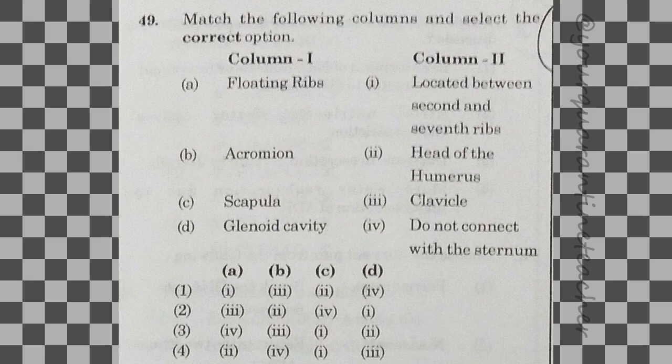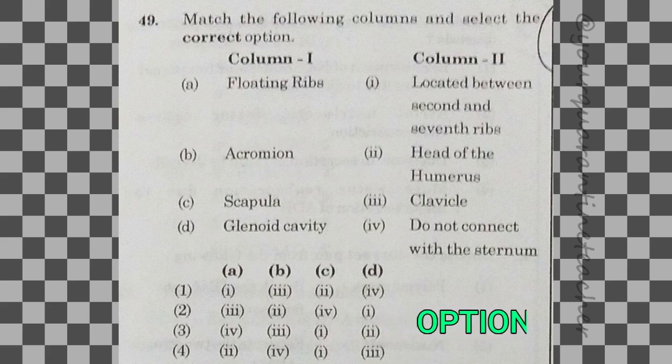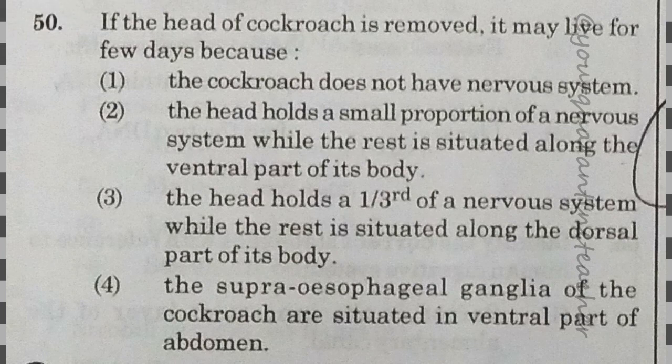49th question: match the following. Floating ribs do not connect with the sternum. The answer is option 3 — A4. 50th question: a small portion of the nervous system, while the rest is situated along the ventral part of its body — option 2, A and O.